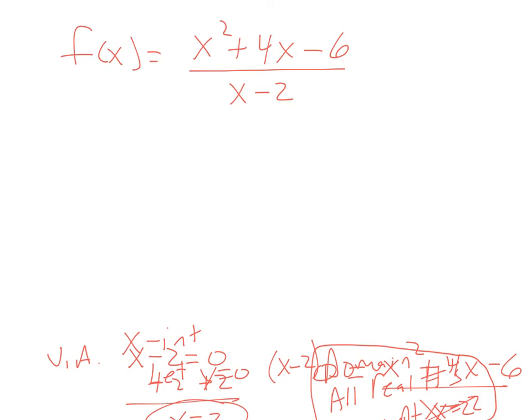Y-intercepts, which are really incredibly easy. The y-intercept is letting x be 0. And then just seeing what's left. So this problem really says y equals 0 squared plus 4 times 0 minus 6 over 0 minus 2. Well that's nothing, that's nothing, that's nothing.